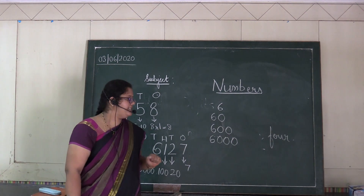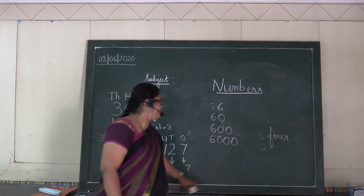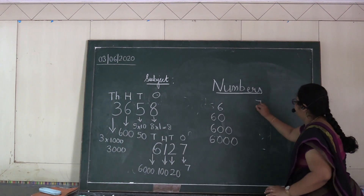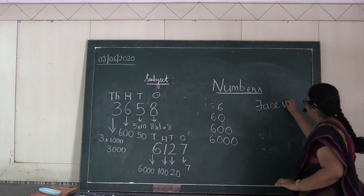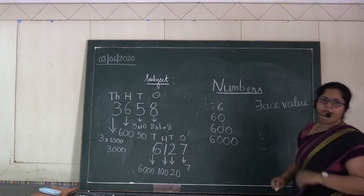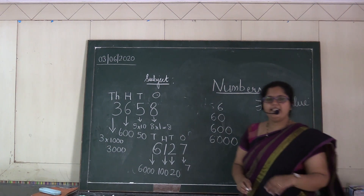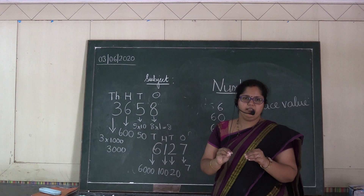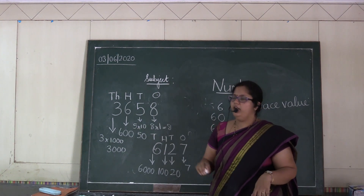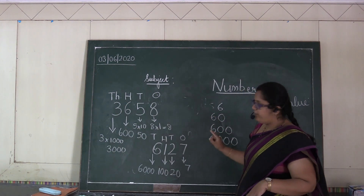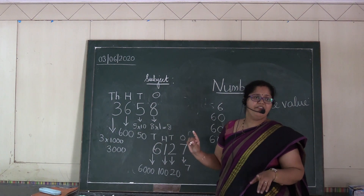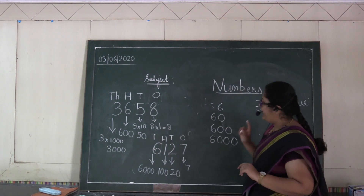Let's see face value. Face value of a digit is the digit itself, whichever place the number is in. The face value will remain the same.